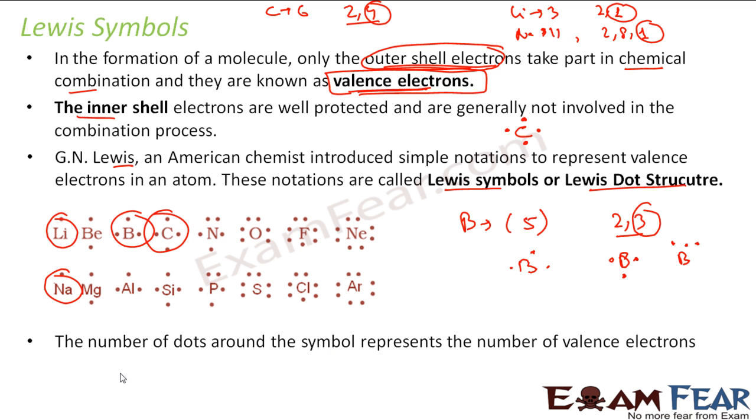You can take more examples. For example, aluminum has atomic number 13. Write the electronic configuration: 2, 8, 3. If you're confused, you can write 1s2, 2s2, 2p6, 3s2, 3p1. This has the outermost electrons 3. Write Al, aluminum, and put 3 electrons—3 dots. That is aluminum.